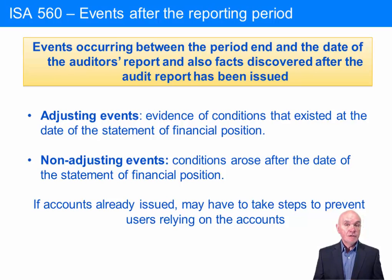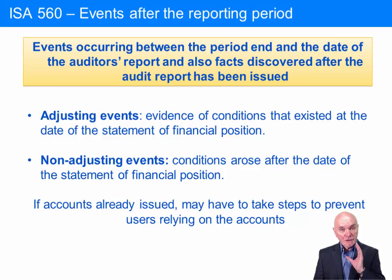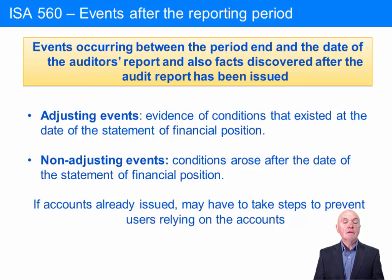These divide into two categories. First of all, an adjusting event. An adjusting event means that you go to the financial statements and you make effectively a journal entry in the statement of financial position or the statement of profit and loss — so you are actually adjusting what the financial statements say, not just the notes, but the main statements themselves. The only occasions on which you do this is where the event which happened after the reporting date gives you evidence of conditions which existed at the date of the statement of financial position.